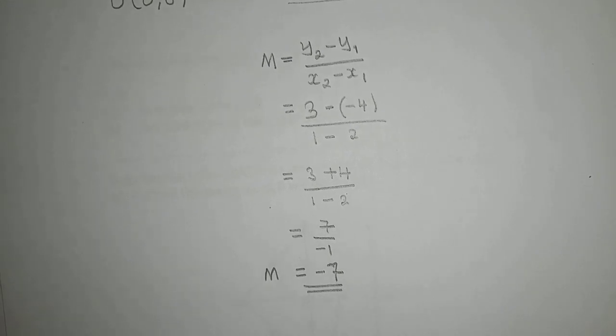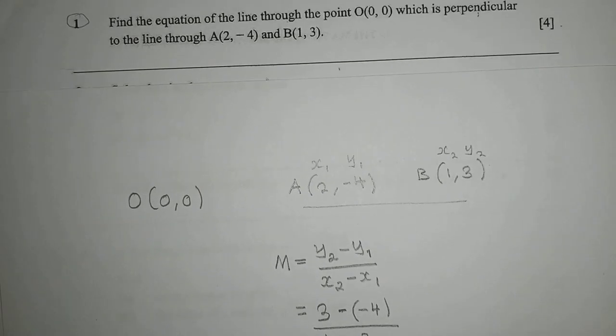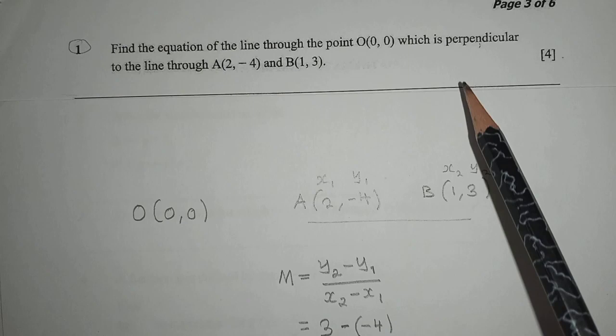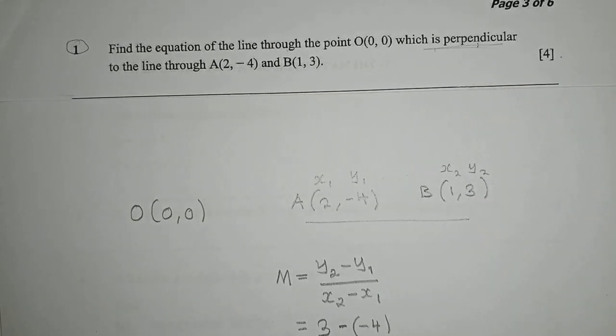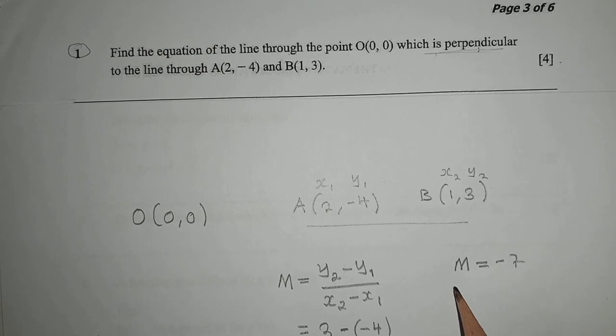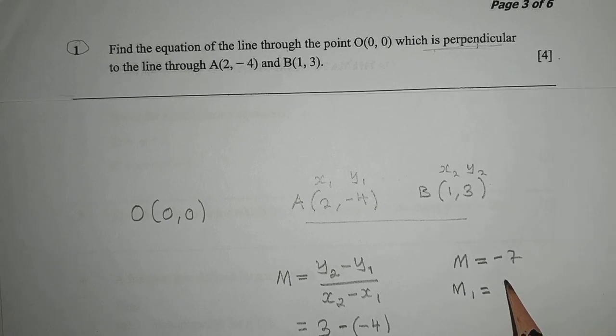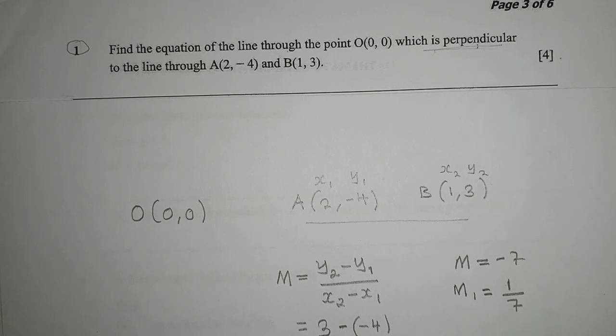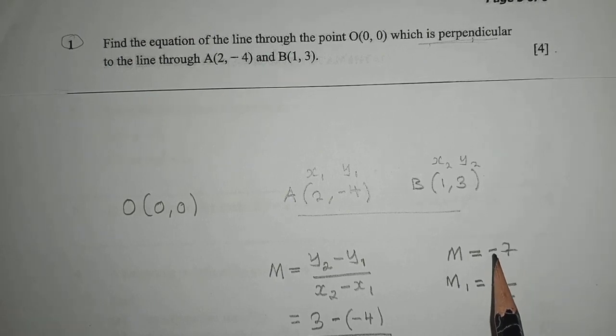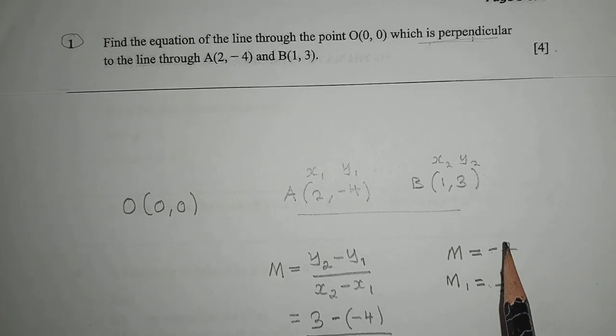Now, since the question says it's perpendicular, the equation we're trying to find is perpendicular to the line through A and B. This means the gradient will change. We found the gradient to be -7, so our new gradient m1 will be 1 over 7. We reciprocate: we change the sign from negative to positive and make 7 the denominator with 1 on top.